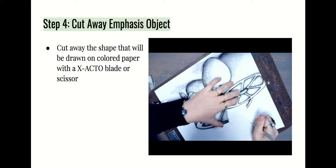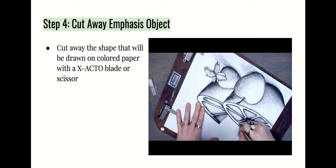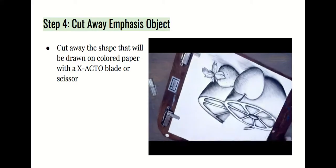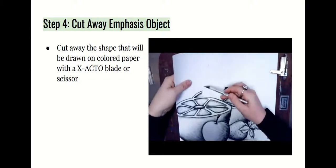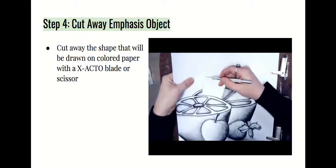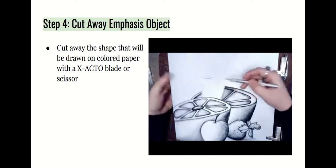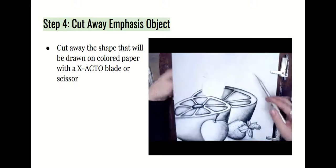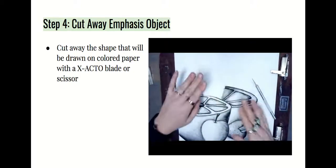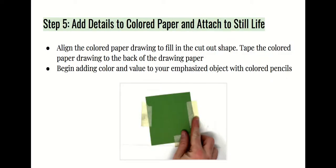Go nice and slow, especially when using this knife. Just follow your lines as best you can — if you make a tiny mistake, it's not a big deal. After cutting your item out, you should be able to pop it right out. After cutting out the shape you chose as your object of emphasis, you are then going to add details onto a colored paper and attach it to your still life.